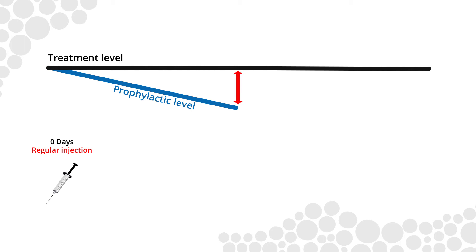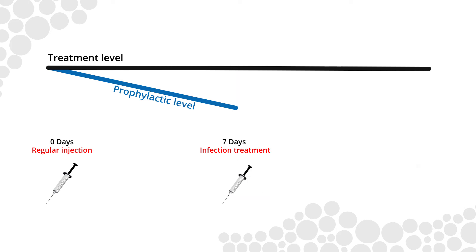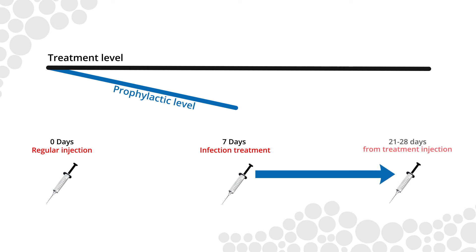If the last regular injection was given seven or more days before the infection, recommended antibiotics to treat a skin or throat infection should be given. If an injection is used for treatment, the date of the next regular secondary prophylaxis injection should be reset to the prescribed frequency — that is 21 or 28 days — from the date of the treatment injection.